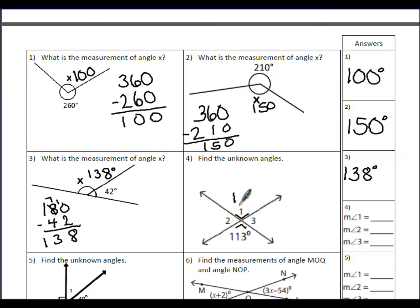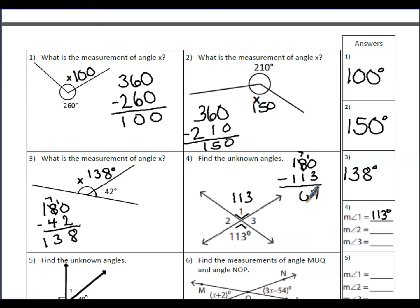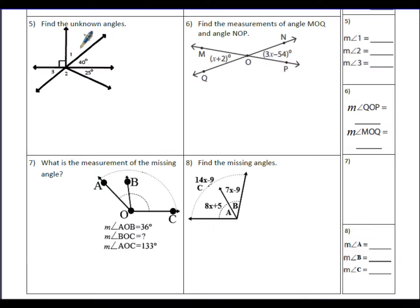Angle 1 and the 113-degree angle are vertical angles, so they are congruent and have the same measure. Angle 3 is supplementary with the 113-degree angle, so 180 minus 113 equals 67 degrees for angle 3. Angles 2 and 3 are on opposite sides sharing a vertex — they are vertical angles and therefore congruent.